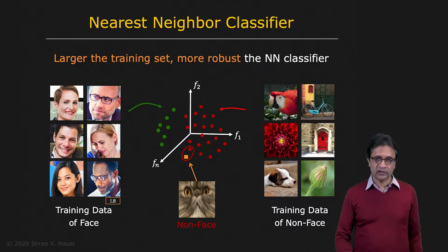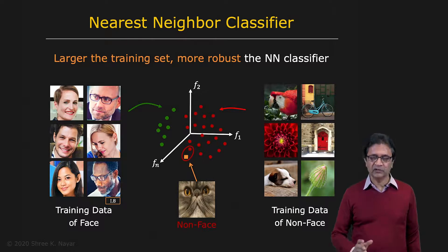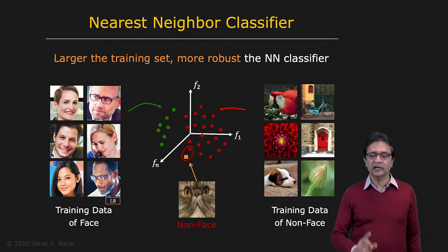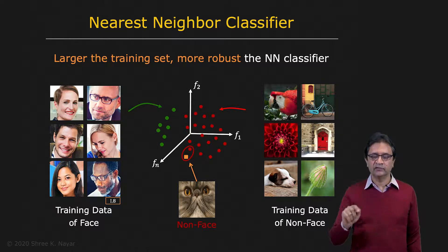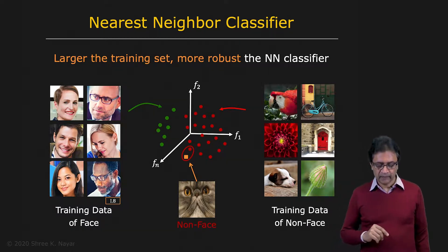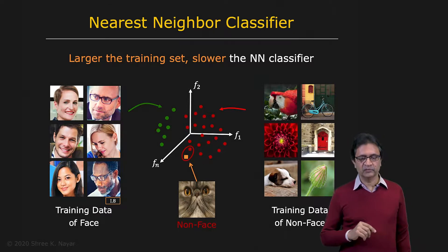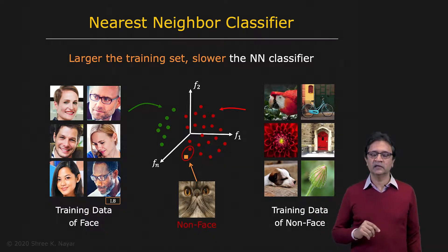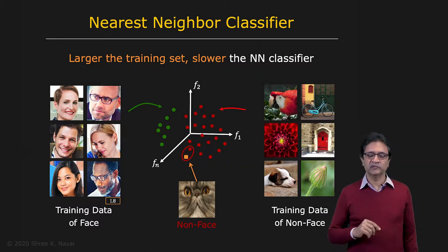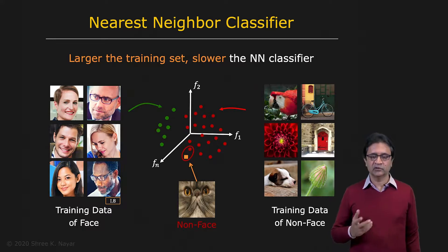There are smarter ways of doing it, such as KD trees and so on, but even so it's pretty expensive, given the fact that you're going to be doing this for every pixel and every scale. So that's the problem here — increasing the size of the training data is perfectly reasonable, except that it slows things down substantially.